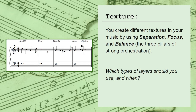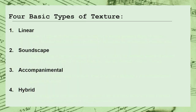In general, every texture or combination of textures that you can come up with can theoretically be sorted into one of four broad categories: linear, accompanimental, soundscape, or hybrid.